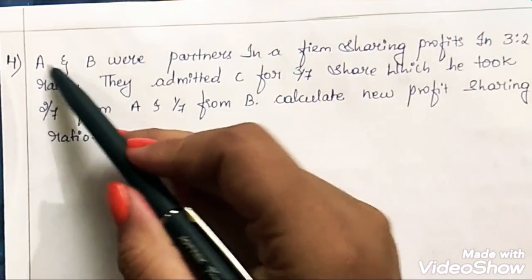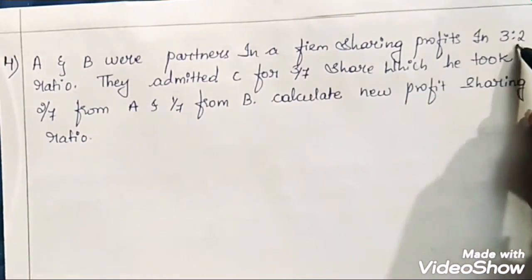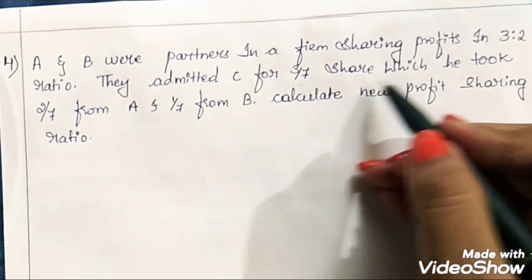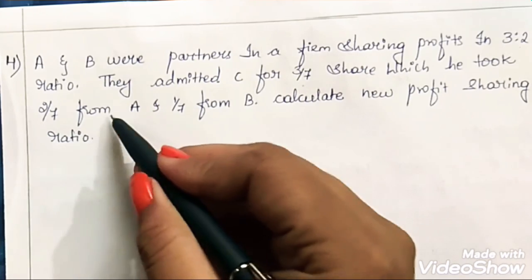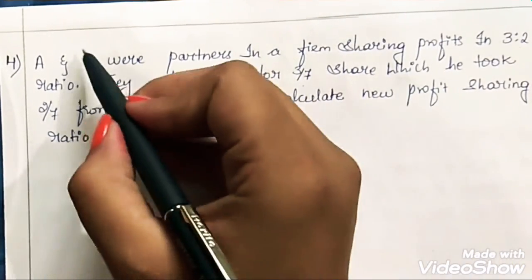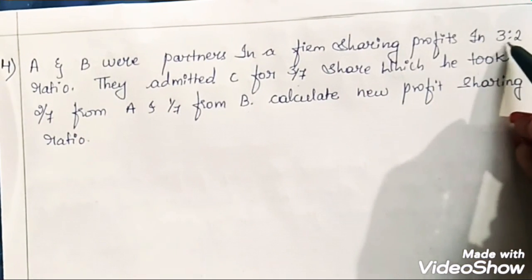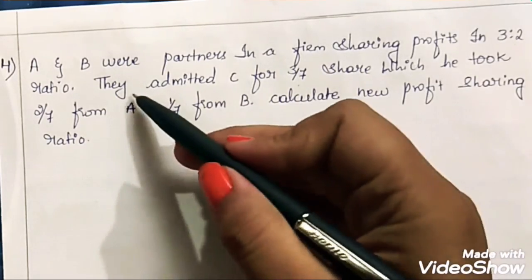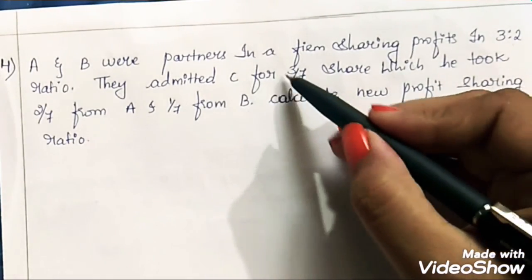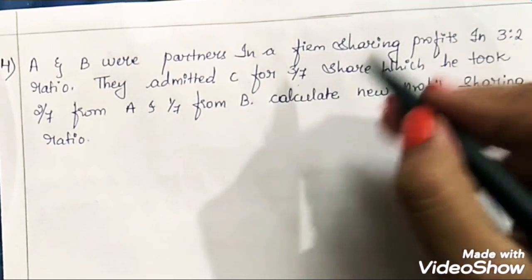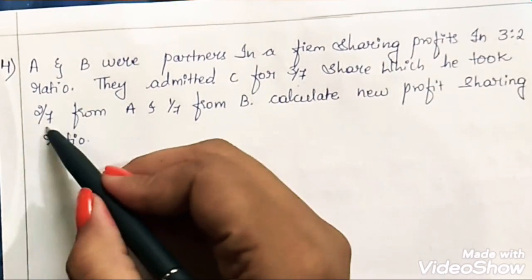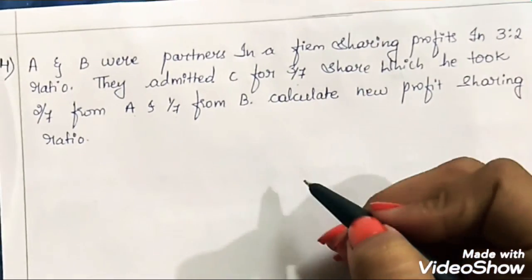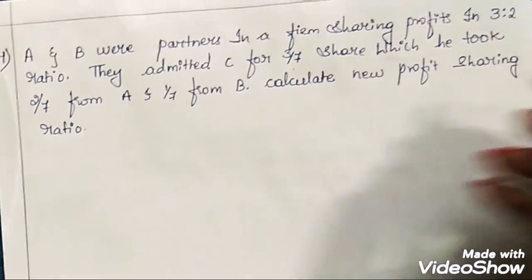The next question: A and B were partners in a firm sharing profits in 3:2 ratio. They admitted C for 3/7 share, which he took 2/7 from A and 1/7 from B. So here there were 2 partners, their profit sharing ratio is given as the old ratio. They admitted C as a new partner. C's total share is 3/7 — he takes 2/7 from A and 1/7 from B. We are asked to calculate the new profit sharing ratio.